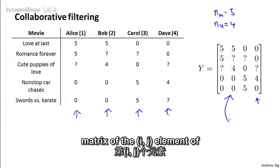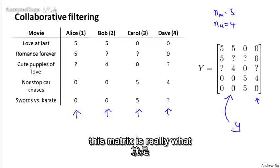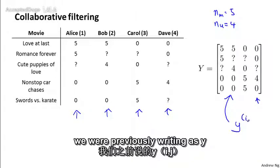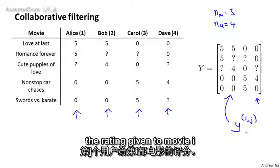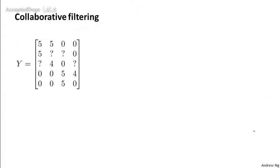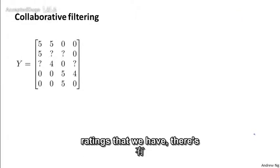And of course, the elements of this matrix, or the ij elements of this matrix, is really what we were previously writing as Y superscript i comma j. It's the rating given to movie i by user j. Given this matrix Y of all the ratings that we have, there's an alternative way of writing out all the predicted ratings of the algorithm.